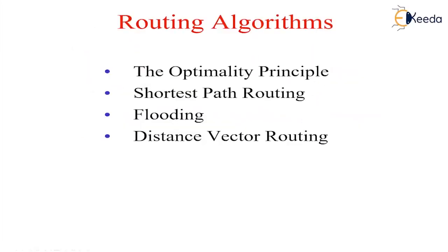The main function of the network layer is routing packets from source machine to the destination machine. In most subnets, packets will require multiple hops to make the journey. The algorithms that choose the routes and the data structures that they use are a major area of network layer design.